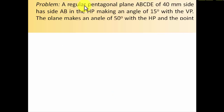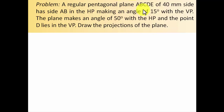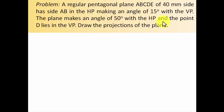A regular pentagonal plane ABCDE of 40mm side has side AB in the HP, making an angle of 15 degrees with the VP. The plane makes an angle of 50 degrees with the HP and the point D lies in the VP. Draw the projections of this plane. There are a whole lot of VPs and HPs in this problem.